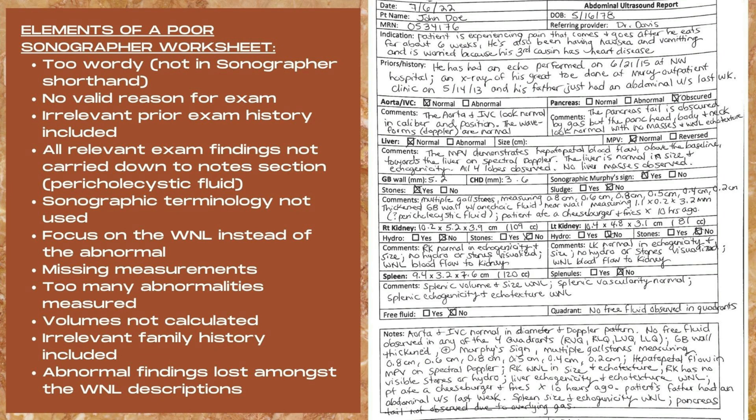In the comments section, multiple gallstones are listed with six individual measurements: 0.8, 0.6, 0.8, 0.5, 0.4, and 0.2 centimeters. It also notes thickened gallbladder wall with anechoic fluid measuring 1.1 by 0.2 by 3.2 millimeters, questioned pericholecystic fluid, and that the patient ate a cheeseburger and fries 10 hours ago. It's only necessary to comment on the largest gallstone — all the rest are redundant measurements. The radiologist needs to know when the patient last ate, but not that it was a cheeseburger and fries; that is irrelevant information.